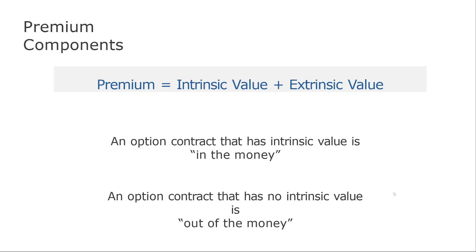An option contract has intrinsic value if it's in the money. What does in the money mean? If you have a strike price of $100 and the current price is $101 or above, you are in the money. If the current price is below your strike — say $95 or $96 — this is called an out-of-the-money option, which has no intrinsic value. I will explain the intrinsic and extrinsic value components in more detail in the intermediate and advanced lessons.